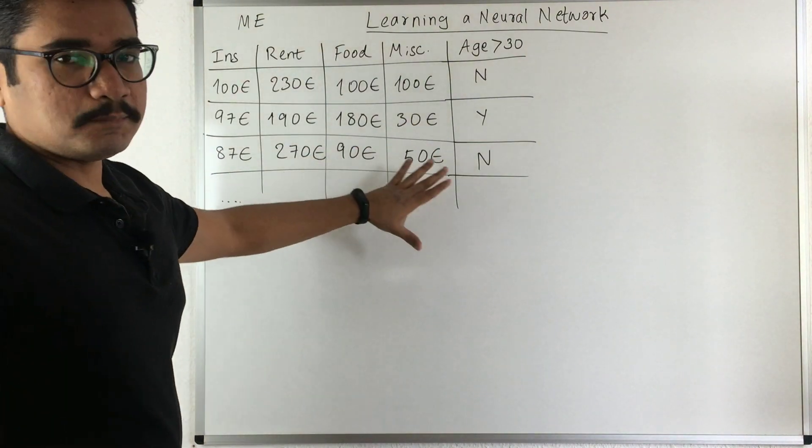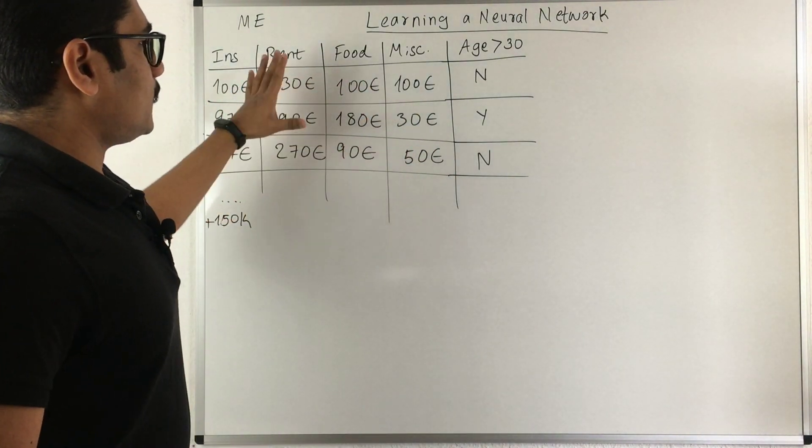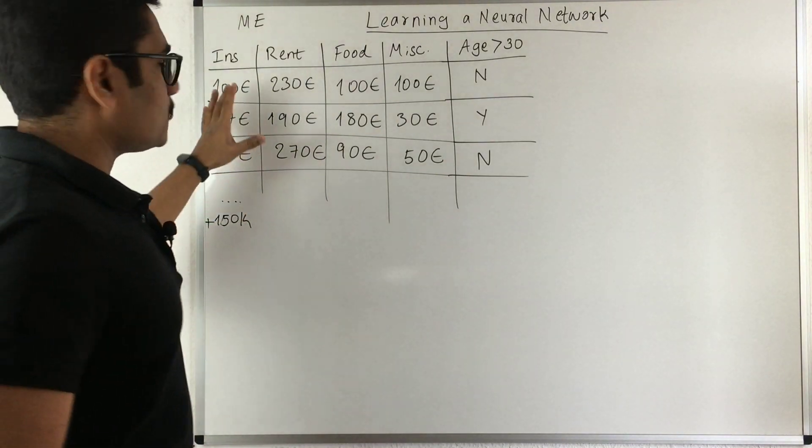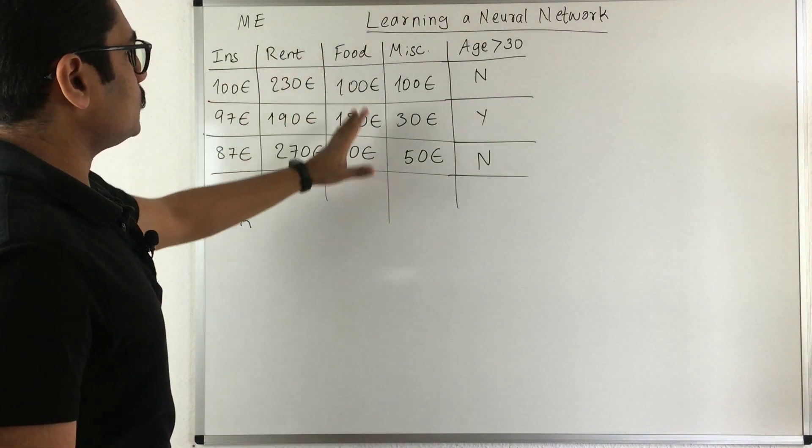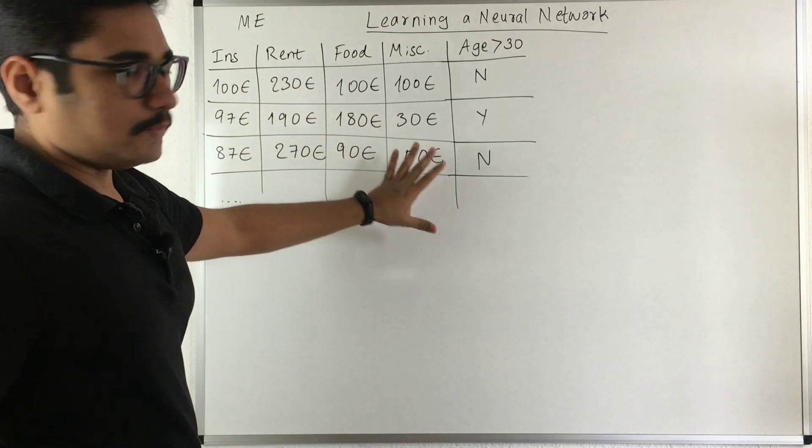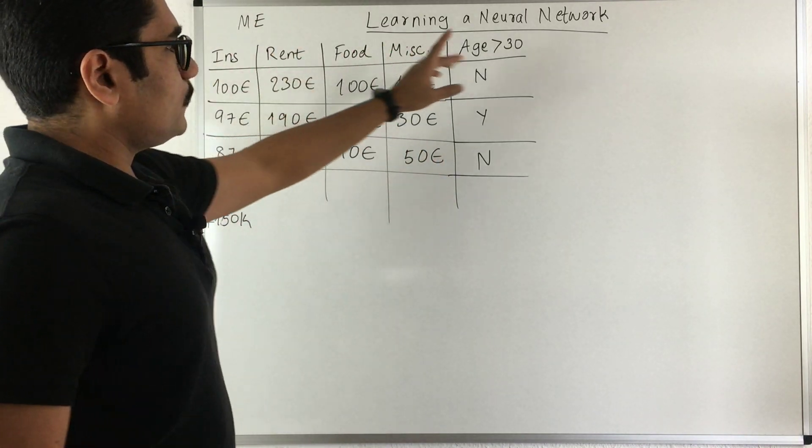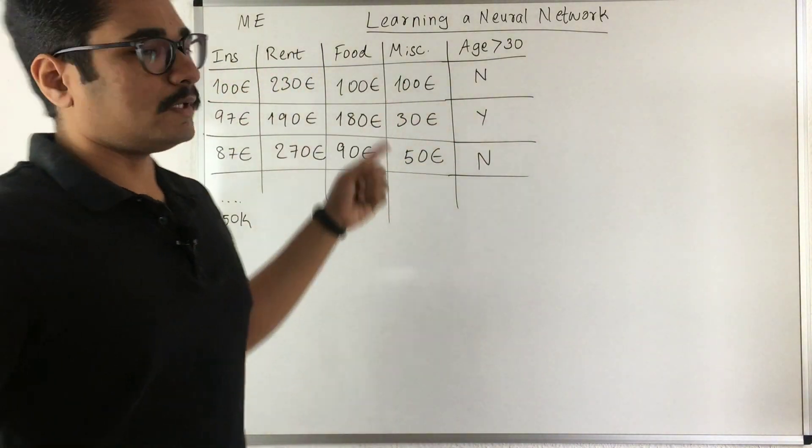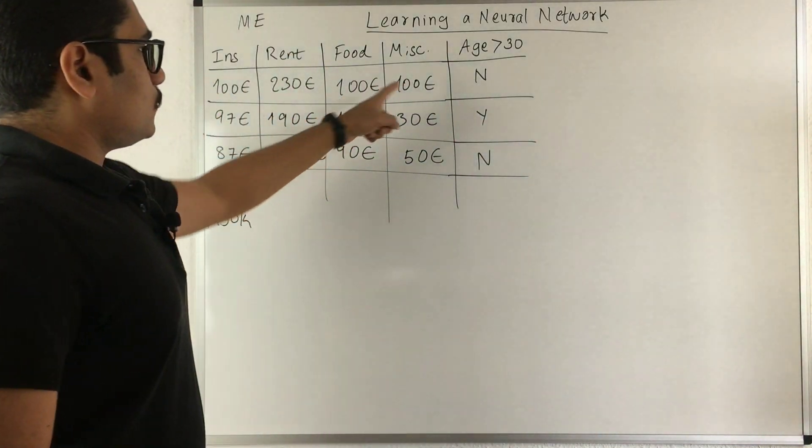These figures are random, not real ones that me or my friends pay. This is just random numbers. You have different figures represented in euros. Whenever you input into the neural network system, you will input real valued numbers, not strings.